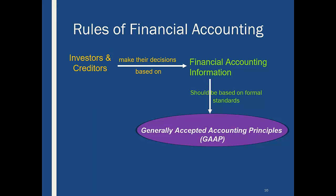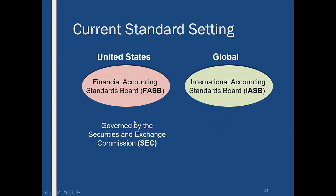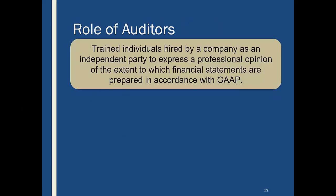Kind of like football — everybody knows there are six points for a touchdown, extra point after, and we're all playing by the same rules. A tackle is a tackle; if you catch it out of bounds it doesn't count. Accounting is no different. In the United States, we are bound by the rules created by the FASB — the Financial Accounting Standards Board — governed by the SEC. Globally, you're bound by the International Standards Board. The auditors are basically like the referees, making sure everybody is playing by the same rules.